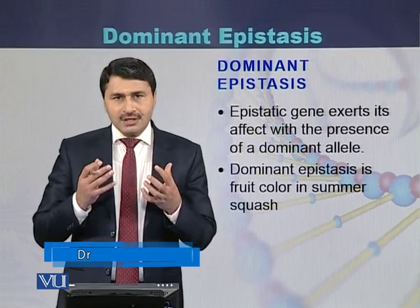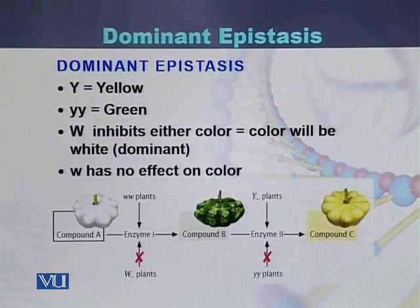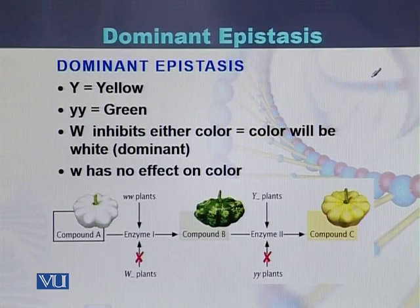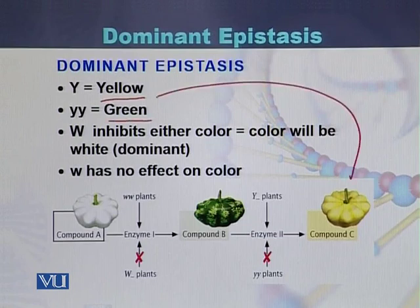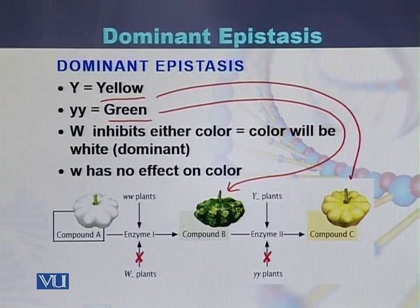The example of dominant epistasis is the fruit color in summer squash. In this example, there is a gene for yellow color and a gene for green color in the summer squash. There is another gene that can inhibit either color — if that gene is present in the dominant form, it can inhibit the green color as well as the yellow color.